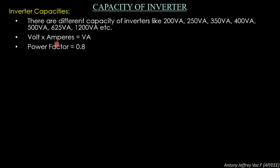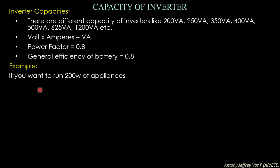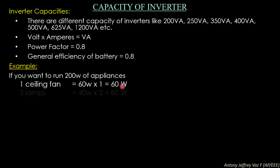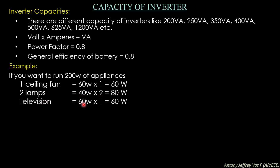To convert watts to volt-amperes, multiply voltage by amperes. The general efficiency of a battery used in an inverter is 0.8. As an example: one ceiling fan at 60W, two lamps at 40W each (80W total), and one television at 60W gives a total load of 60 + 80 + 60 = 200 watts.